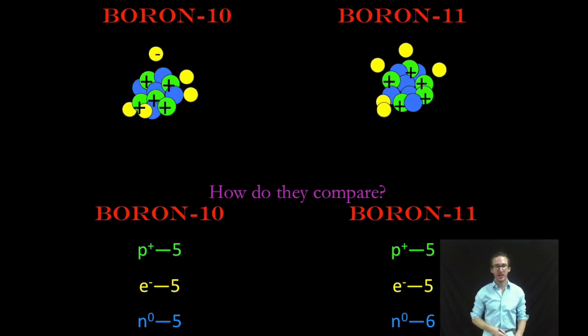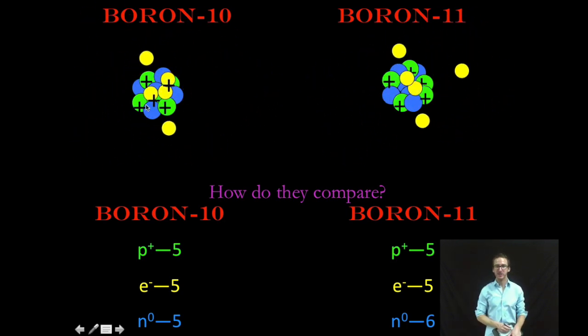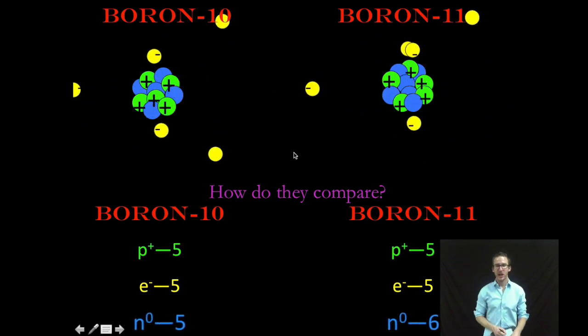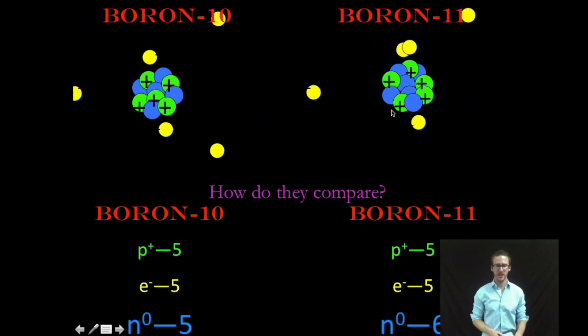So as a quick refresher check out the two atoms of boron that you have on your screen. I know they're both atoms of boron because they each have five positive protons however there are two different isotopes of boron because they each have a different number of neutrons.